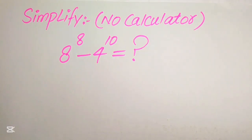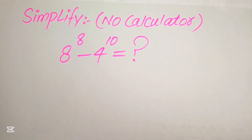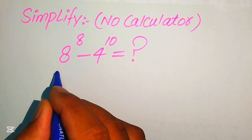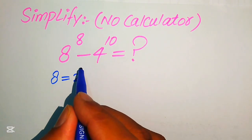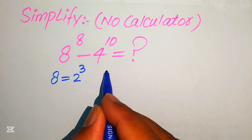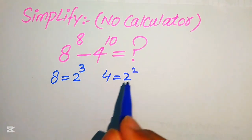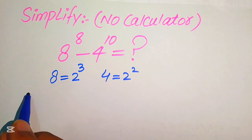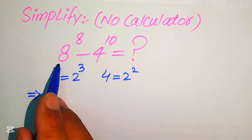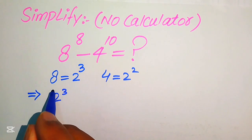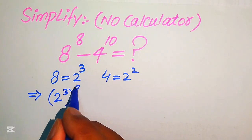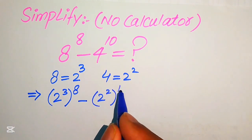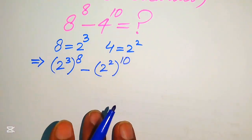The very first thing we are going to do is rewrite the bases. We write 8 as 2 cubed and we write 4 as 2 squared. We replace these two values in the above expression, so it becomes: 2 cubed, whole power 8, minus 2 squared, whole power 10.